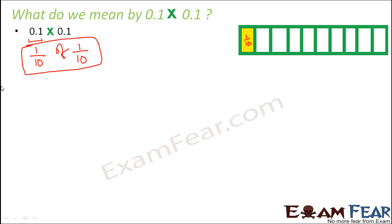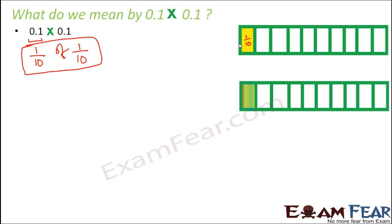One out of those 10 compartments represents one tenth of this complete set — shown as the yellow colored region. Now when I say one tenth of one tenth, that means I am talking about one tenth of this yellow part. So we divide this part into 10 compartments, and then one part out of those 10 parts — marked in orange — represents one tenth of one tenth.